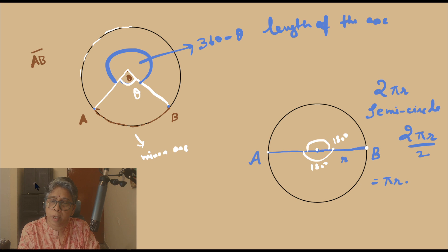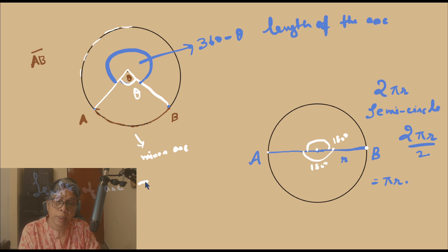Now let me note that when the length of the arc is πr, the angle subtended is 180 degrees.